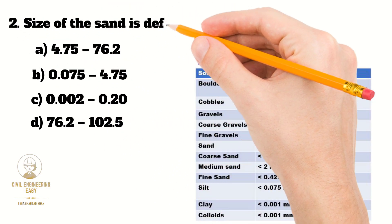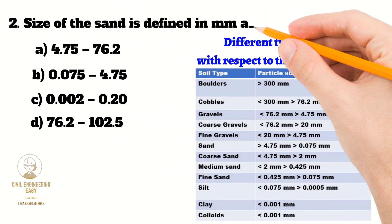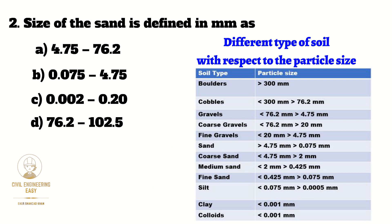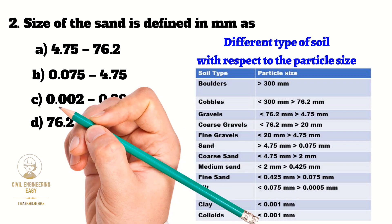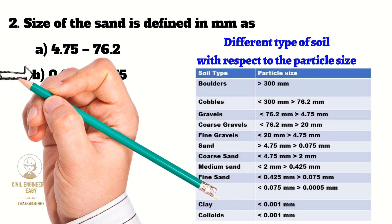In MCQ number two, the size of sand is defined in mm. As seen in the particle classification of soil, the size of sand is greater than 0.075 mm and less than 4.75 mm. So the correct option is B.